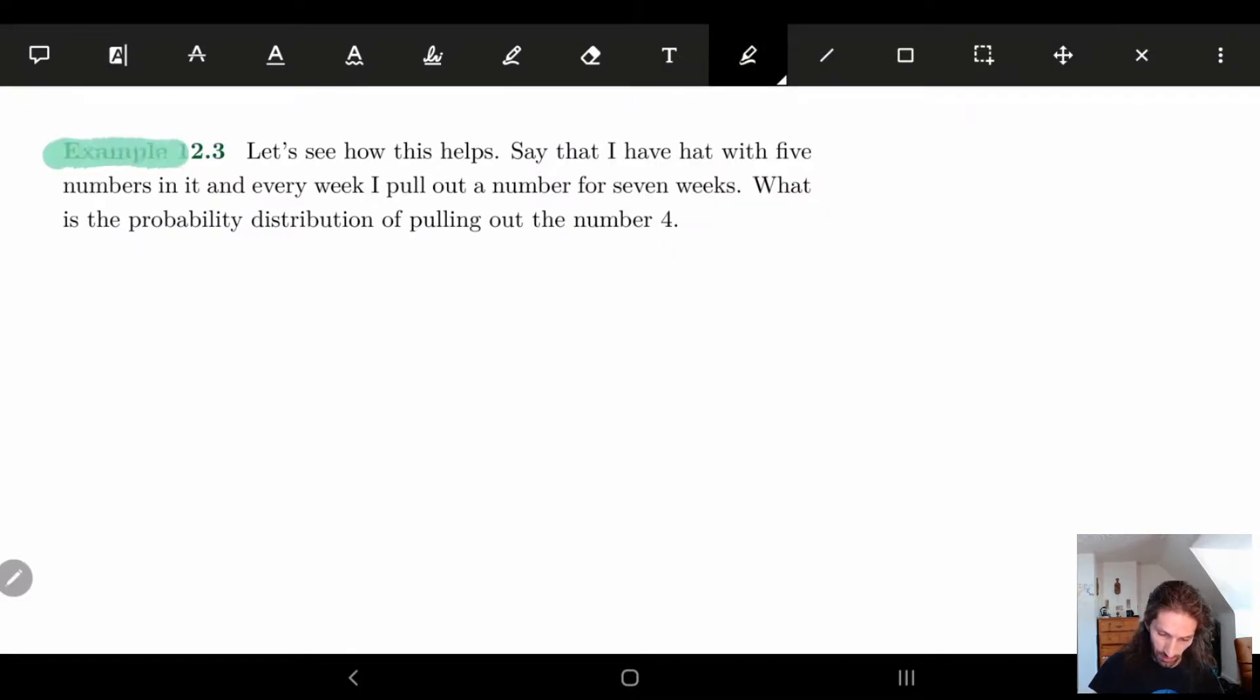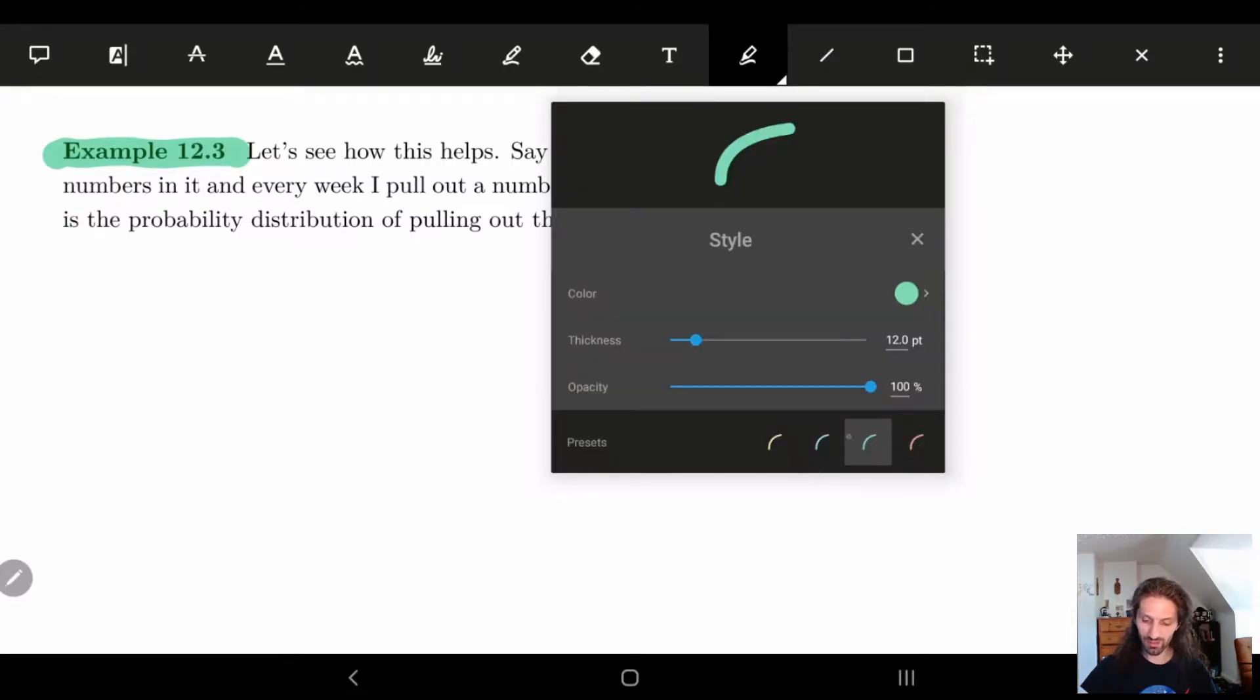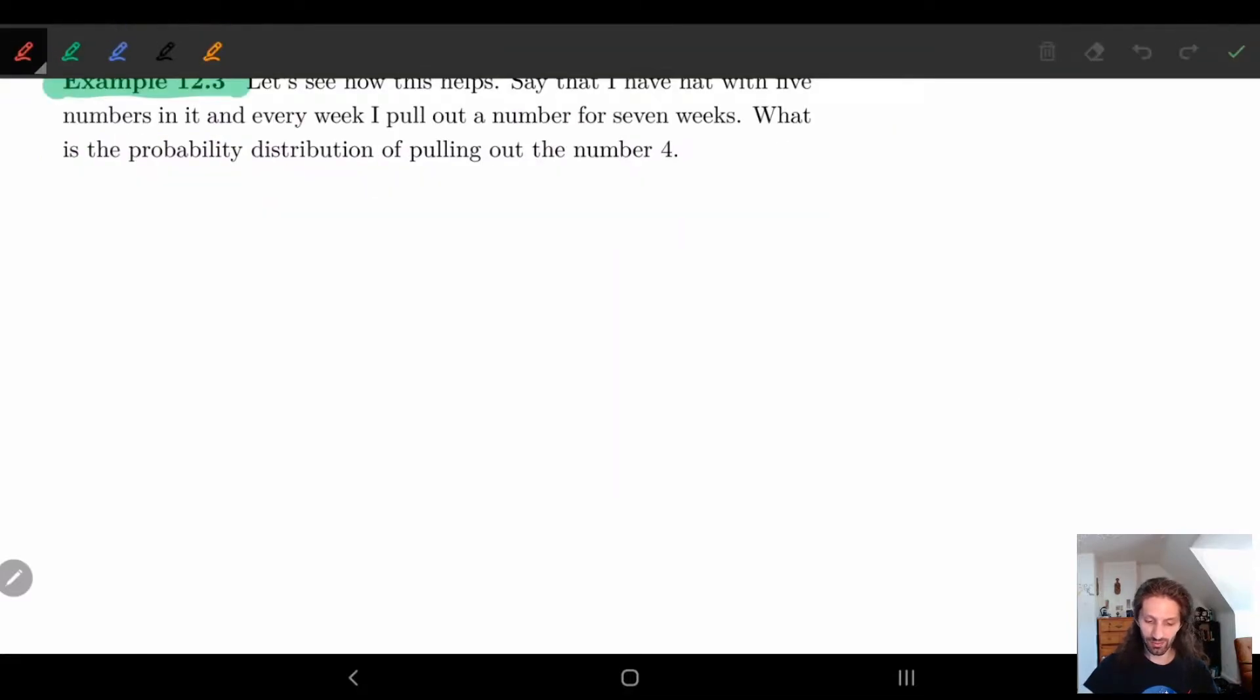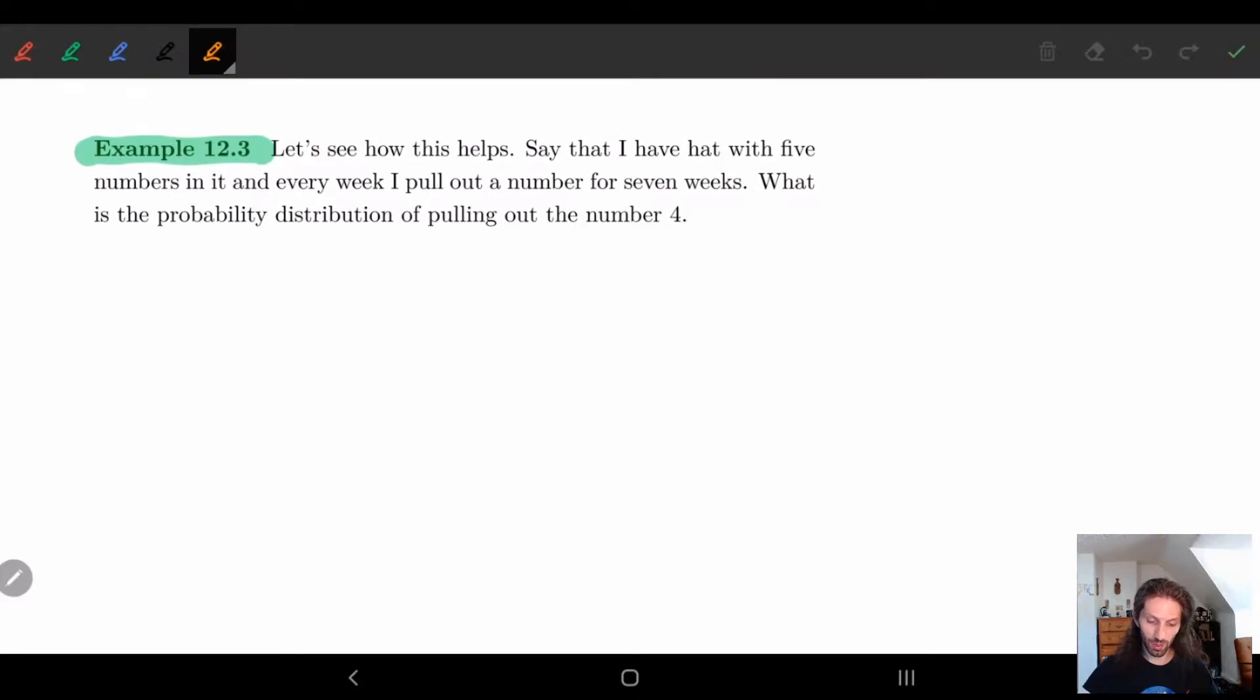So what I have is I start off with some hat and I have five numbers in it. You can also think of this as a five-sided die. We kind of do the same examples multiple times in this class. But yeah, so I have five numbers in it and every week I'm going to pull out a number.